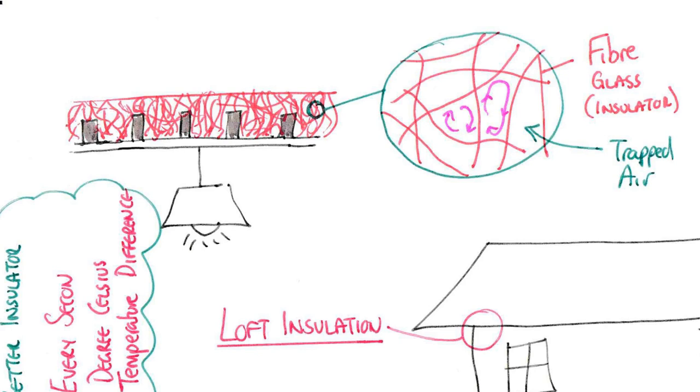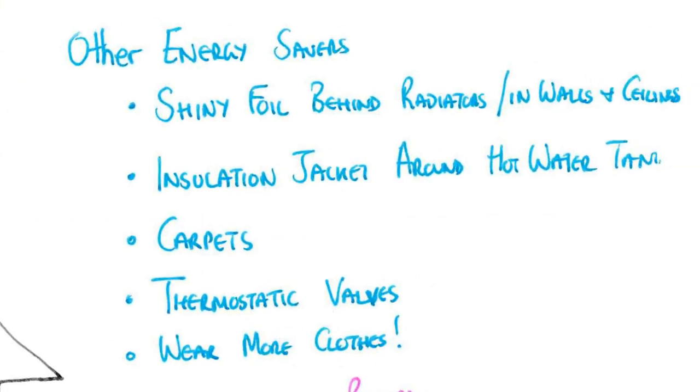Other energy saving devices: you can put shiny foils behind the radiator or in the walls or ceilings to reflect infrared radiation back into the room. An insulation jacket around the hot water tank. Carpets stop heat escaping by conduction through the floor. Thermostatic valves allow you to control the temperature in each room—the lower you set them, the more energy you save. Perhaps the most effective is if you wear more clothes; you'd be amazed how less you need to use heating.